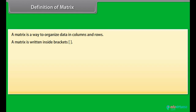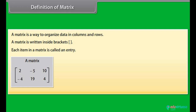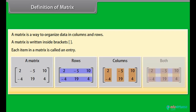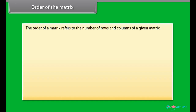Definition of matrix: A matrix is a way to organize data in columns and rows. A matrix is written inside brackets. Each item in a matrix is called an entry. Look at this matrix — it has two rows and three columns. The entries of the matrix are 2, -5, 10, -4, 19, 4. The order of a matrix refers to the number of rows and columns of a given matrix.